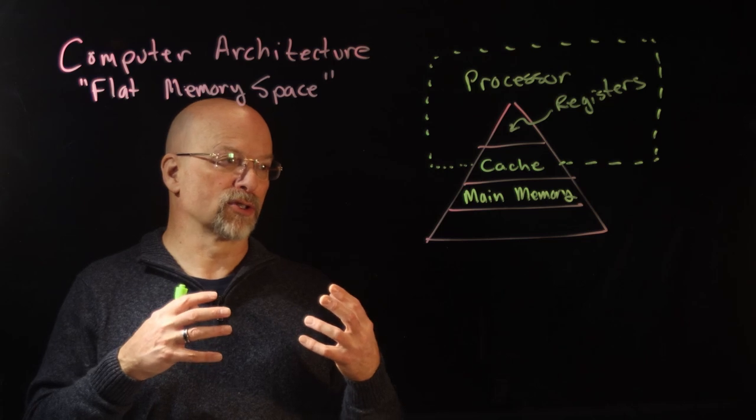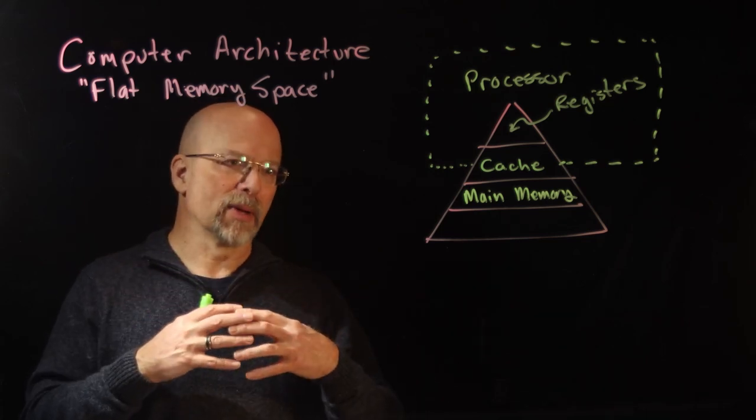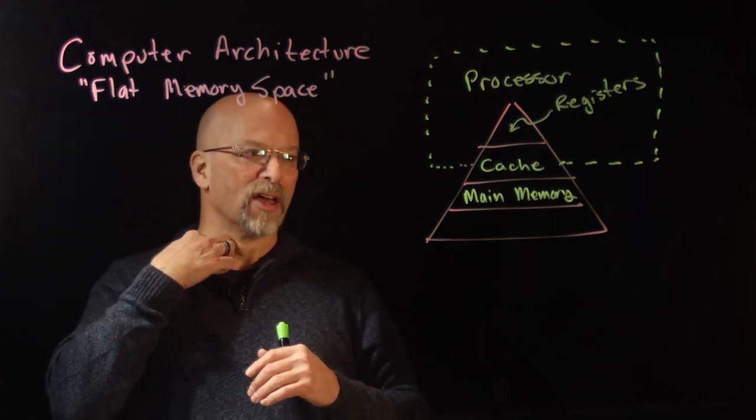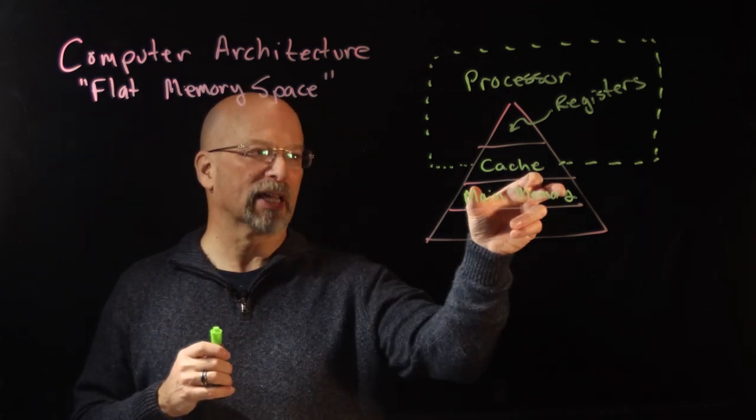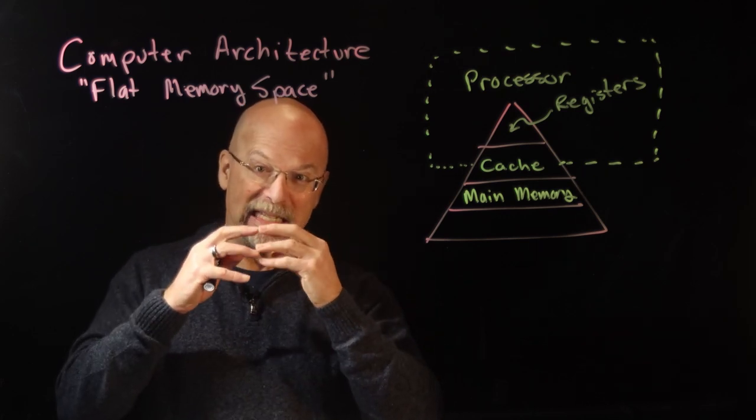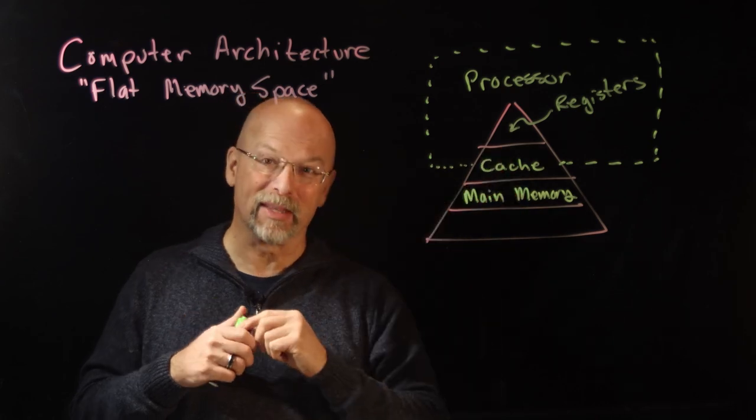For example, if you're running a browser, certain pieces of software that are active with that browser are going to be loaded into main memory. The piece of code that I'm executing is contained in main memory, but the for loop that I'm currently inside of may be in the cache.